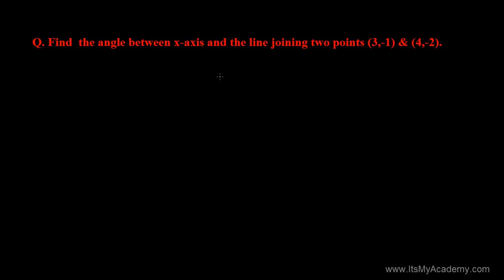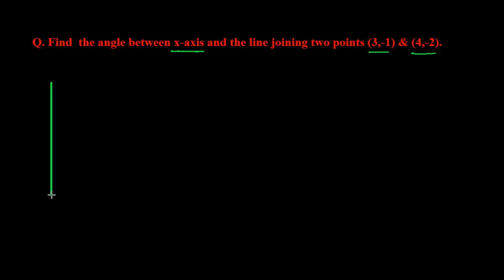Based on the slope of a line, we have another question here. The question is: find the angle between the x-axis and the line joining the two points three comma minus one and four comma two. So let's first try to show this given question in the form of a picture.